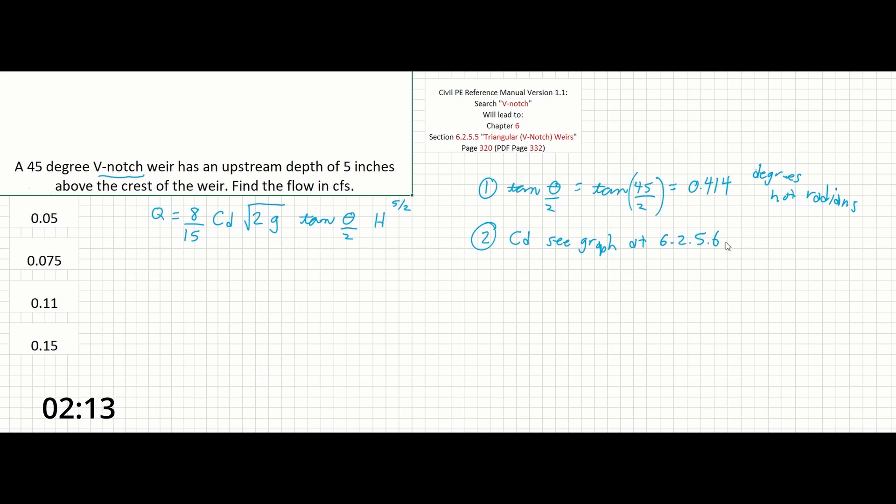So this is going to be in section C graph at 6.2.5.6. So this graph has a series of curves on it and if we follow along the curve for the 45 degree V-notch weir until we get to the height of 5 inches.